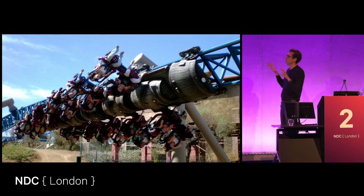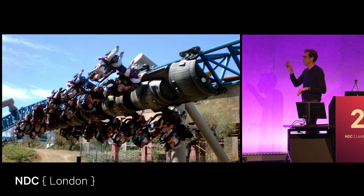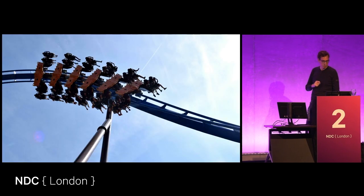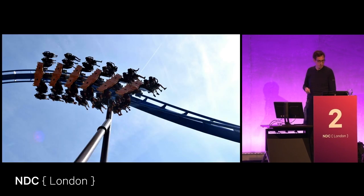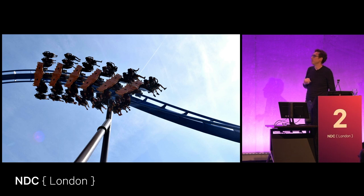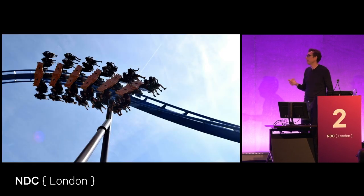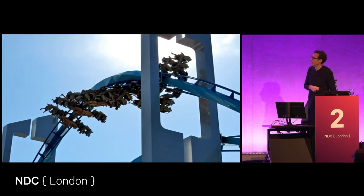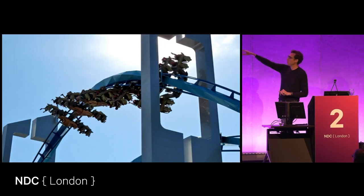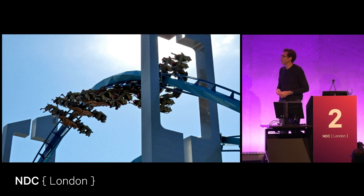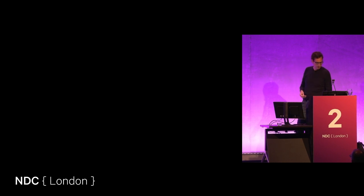Then we have wing coasters — rollercoasters that have you in a wing position next to the track. This is one of the first ones from Intamin in Spain, Furius Baco. This is one in the Netherlands, Phoenix in Toverland. This is a modern B&M wing coaster and those are great — you really have that flying feeling. It's a little scary because you're on the side of the track, especially when they rotate you through very narrow theming elements that look like you're going to die, but you're just flying through.